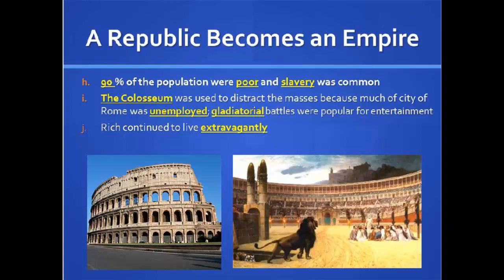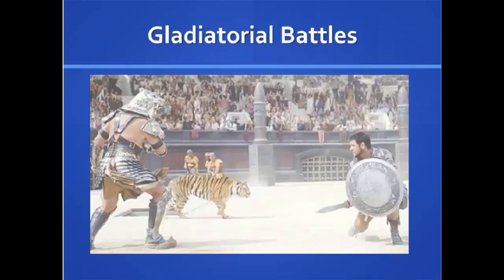Republic becomes empire — socially, 90% of the population were poor and slavery was common. The Colosseum was used to distract the masses because much of the city was unemployed. Gladiator battles were popular for entertainment. However, the rich continued to live extravagantly. At the Colosseum, people could go and it didn't cost a lot of money, so anybody could afford it and have a good time, but it was unfortunately just a temporary fix. It got people in the right mood and having fun, but it was a shadow of the real problems going on during the time period. The movie Gladiator does a pretty good job of depicting that era.